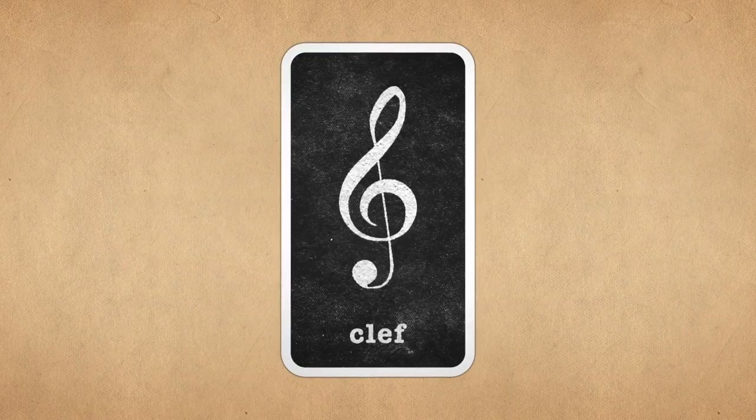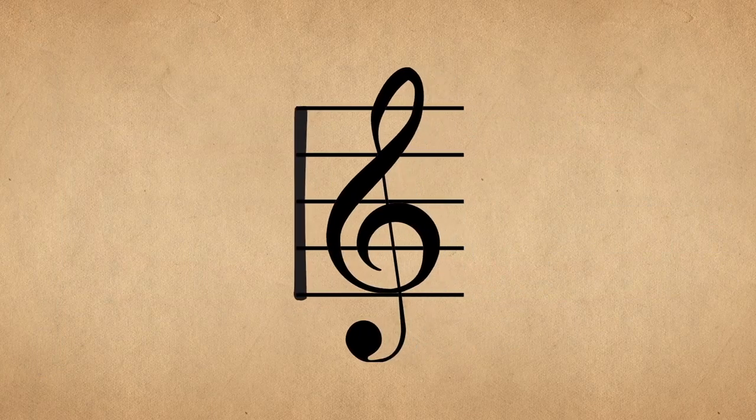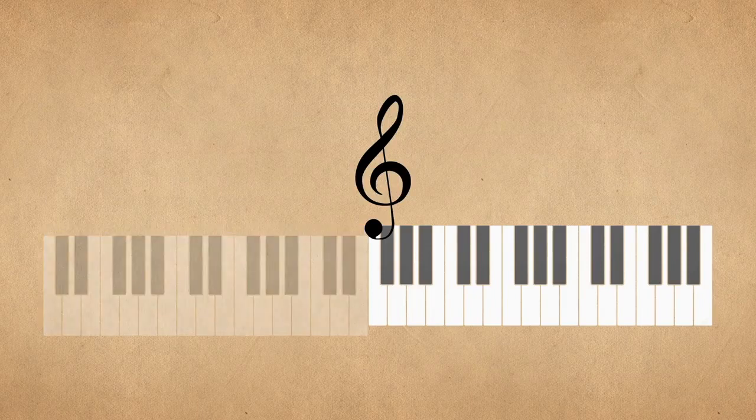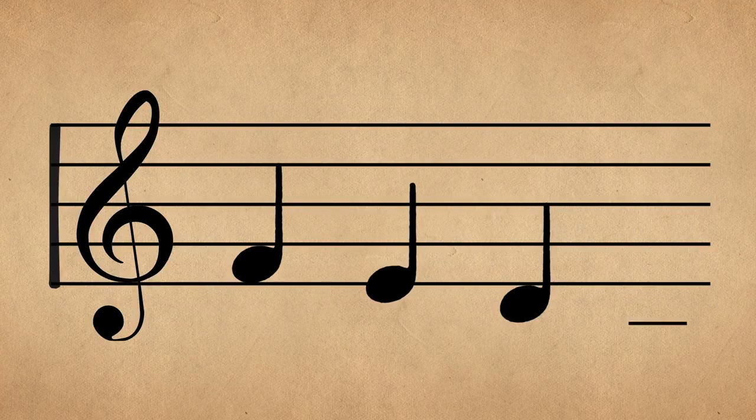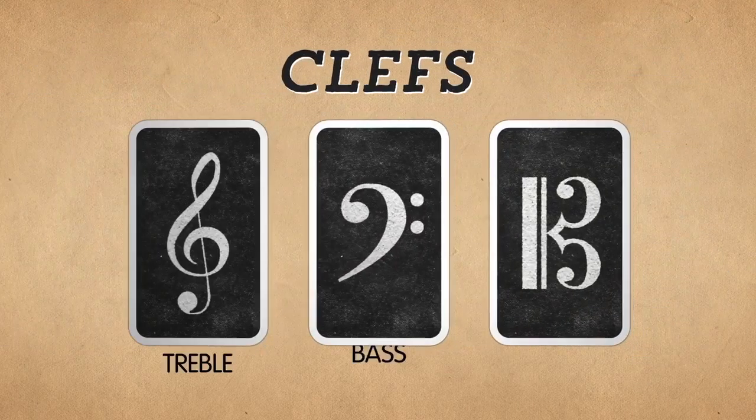We use something called a clef. A clef is a weird-looking figure placed at the very beginning of the staff, and it acts like a reference point telling you that a particular line or space corresponds to a specific note on your instrument. If we want to play notes that aren't on the staff, we kind of cheat and draw extra little lines called ledger lines and place the notes on them. If we have to draw so many ledger lines that it gets confusing, then we need to change to a different clef.